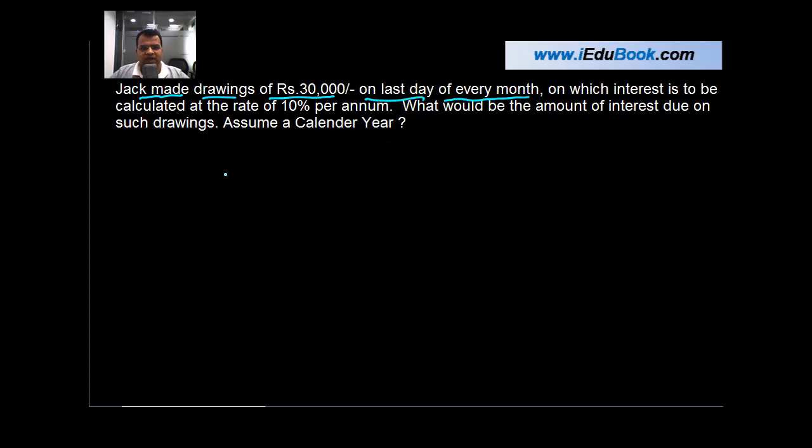Jack is making drawings of rupees 30,000 on the last day of every month. You're told to assume a calendar year, so the first drawing is made on January 31, the second on February 28, the third on March 31, and so on until the end of the year on December 31.